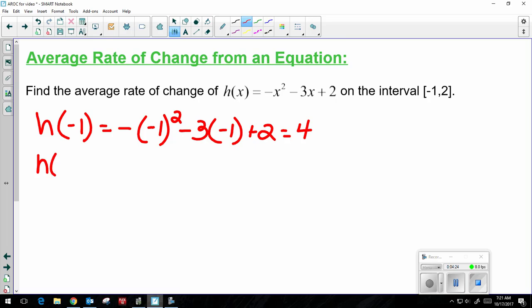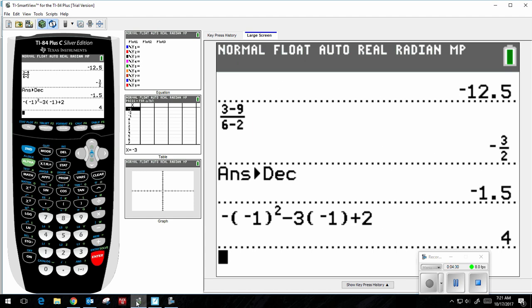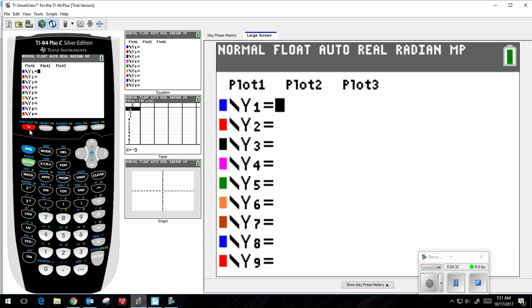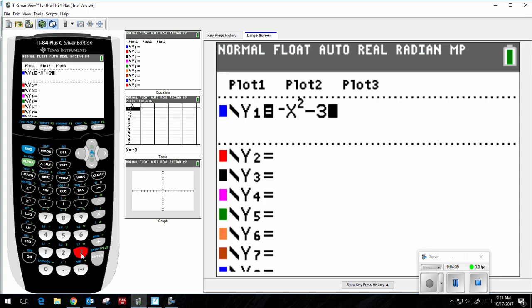And then I would have to do the same thing with h of 2. But you also have another option. You can go to your calculator, you can go to the y equals, clear out anything if you have it in there, and type in the entire equation: negative x squared minus 3x plus 2.